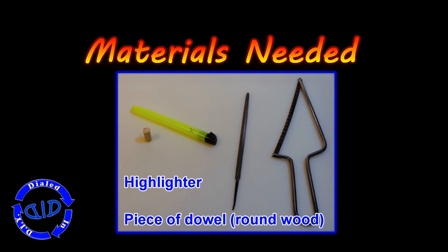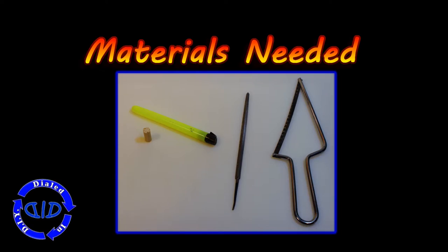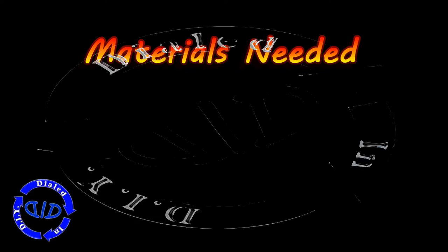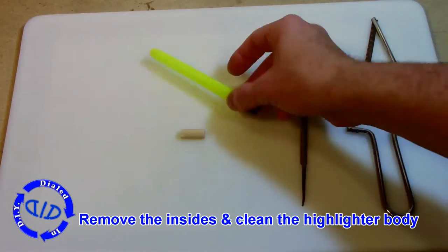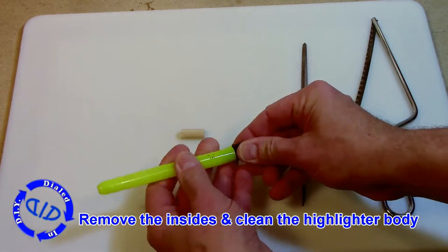This highlighter whistle really does work and we'll show you that and more at the end of the video. But to get started, all you need for materials are a highlighter and a piece of wooden dowel. To be completely honest, any hollow-bodied pen will actually work for this purpose, but this time we're using a highlighter.